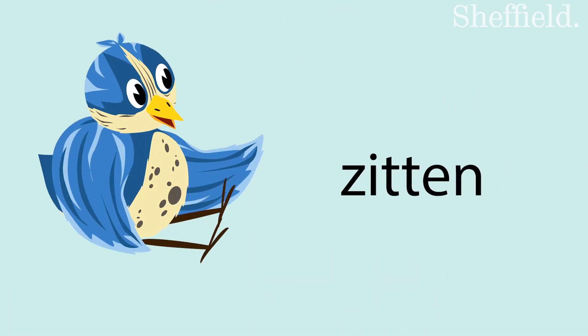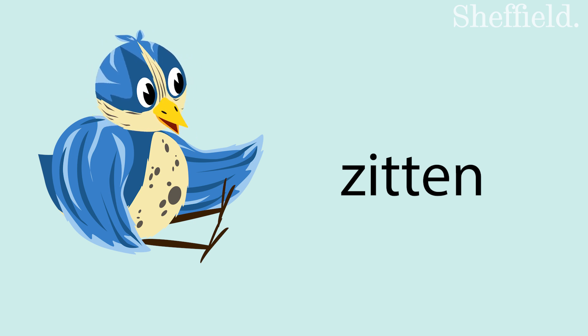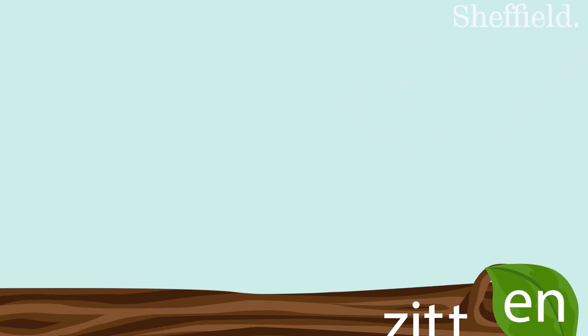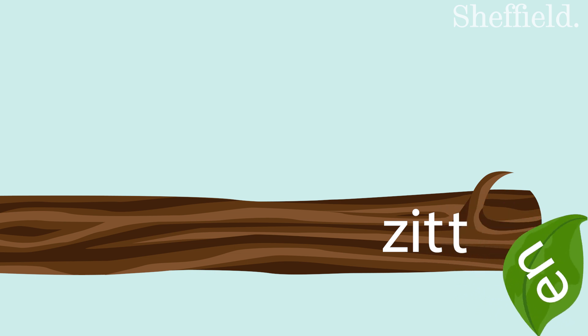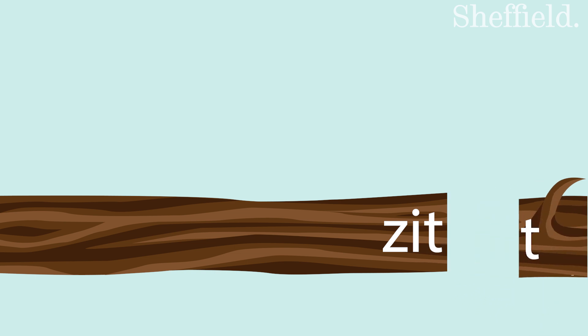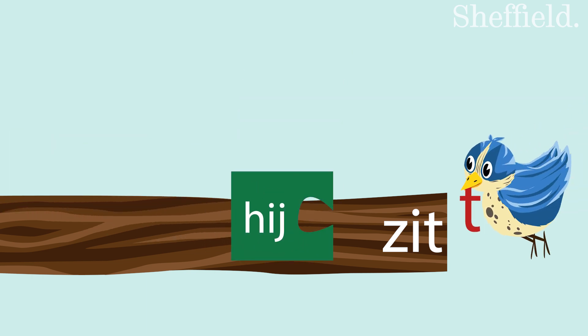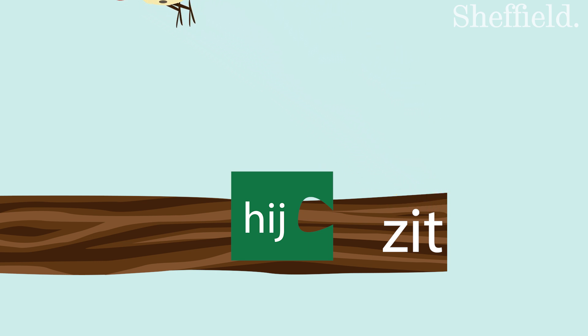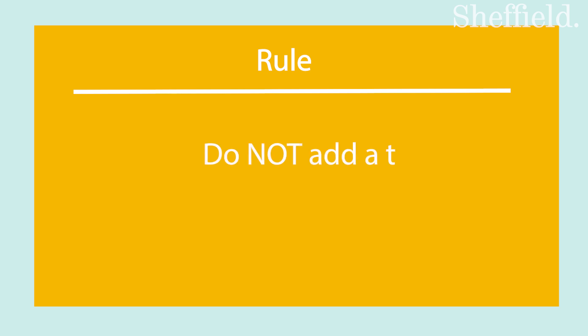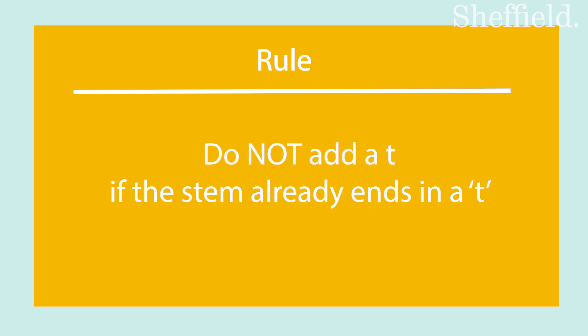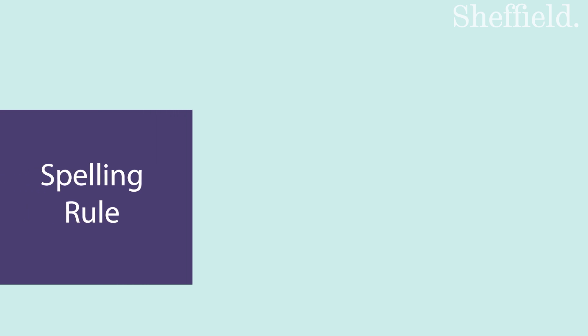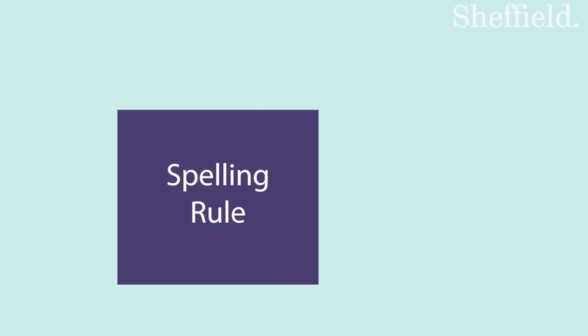But wait — what about verbs like zitten, a verb with a stem that ends in a T? With zitten, we start as normal: chop off the -en, doubled consonant, so drop a T to get the stem zit. Now add the endings — but wait! Do not add a T if the stem already ends in a T. So jij zit and hij zit, not zitt. The spelling rules always supersede the conjugation rule.